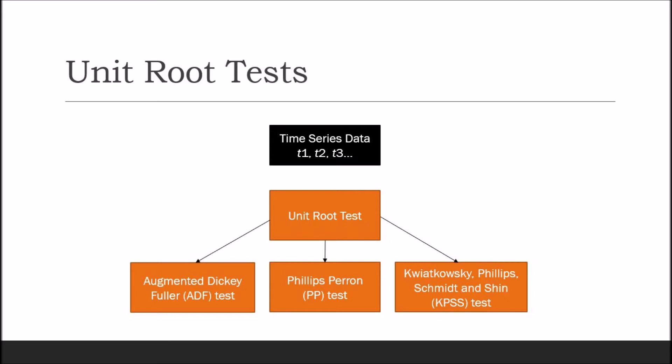The Augmented Dickey-Fuller test is the most common method for testing unit root. The Phillips-Perron test is an alternative model to test the presence of unit root in a time series. The basic difference between the ADF and PP tests is that PP is a non-parametric test whereas ADF is a parametric test. The classical testing framework is sometimes found to be biased towards accepting the null hypothesis. Therefore, Kwiatkowski-Phillips-Schmidt-Shin introduced a better test compared to the ADF or PP test, called the KPSS test.